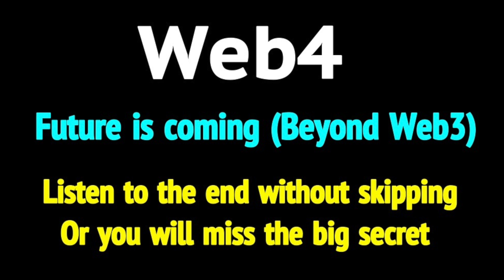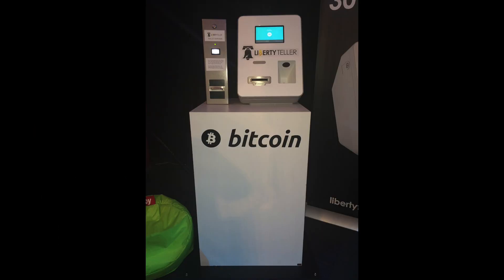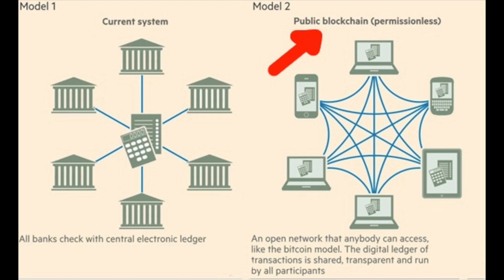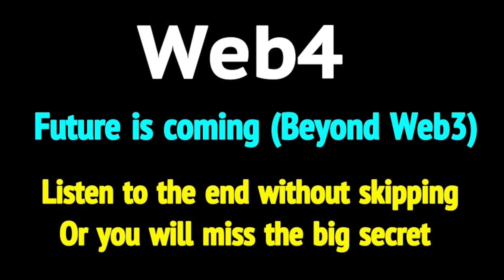Right now, we're transitioning into Web 2.5. Web 2.5 is like Bitcoin, where they have blockchains — public ledgers on the internet — where anybody can look at them. They're not really owned by one company or the government. They live on multiple computers. That's Web 2.5.